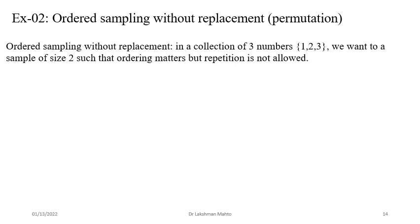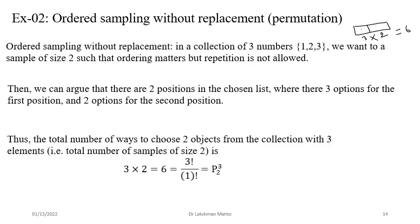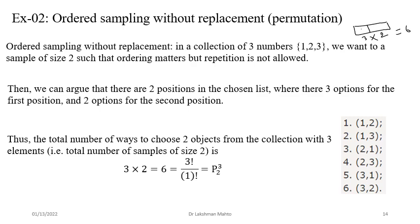Example: population {1, 2, 3}, sample size 2, ordered without replacement. First position: 3 options; second position: 2 options. Total = 6 samples. Those samples are: (1,2), (1,3), (2,1), (2,3), (3,1), (3,2). Note that (1,2) and (2,1) are considered different because order matters.